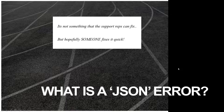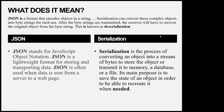What is a JSON error? This is tech speak. JSON is a format that includes objects in a string. Serialization can convert these complex objects into byte strings. After the byte strings are transmitted, the receiver has to recover the original object from the byte string - this is known as deserialization.